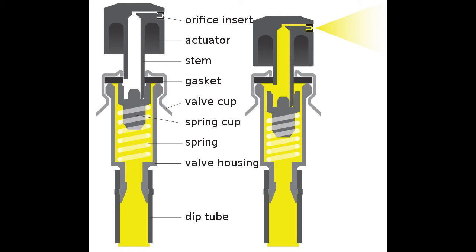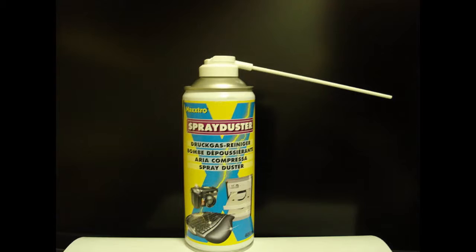In gas dusters, the propellant itself acts as the payload. The propellant in a gas duster can is not compressed air as sometimes assumed, but usually a haloalkane.